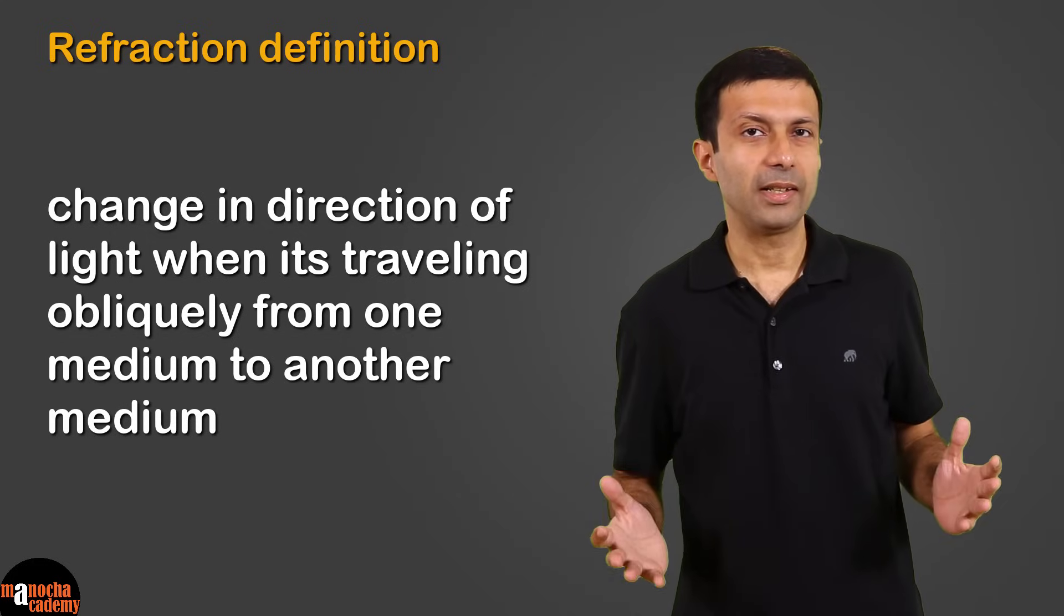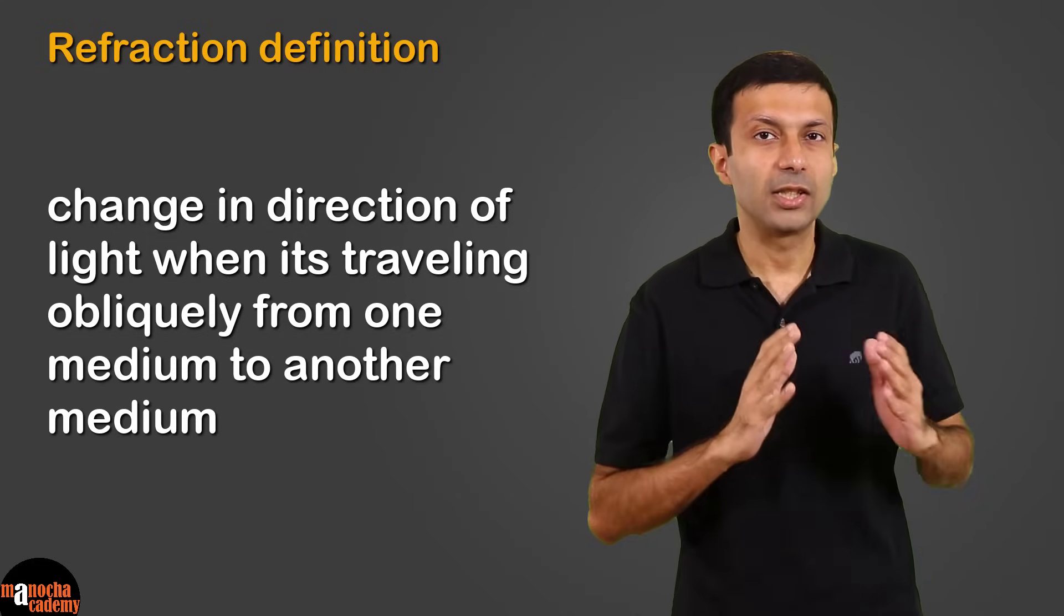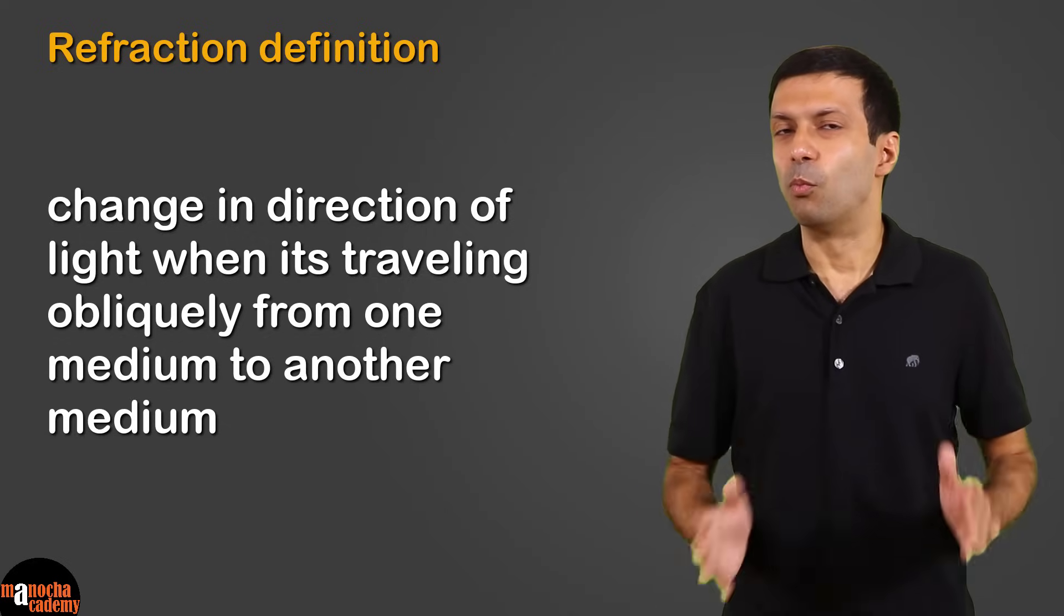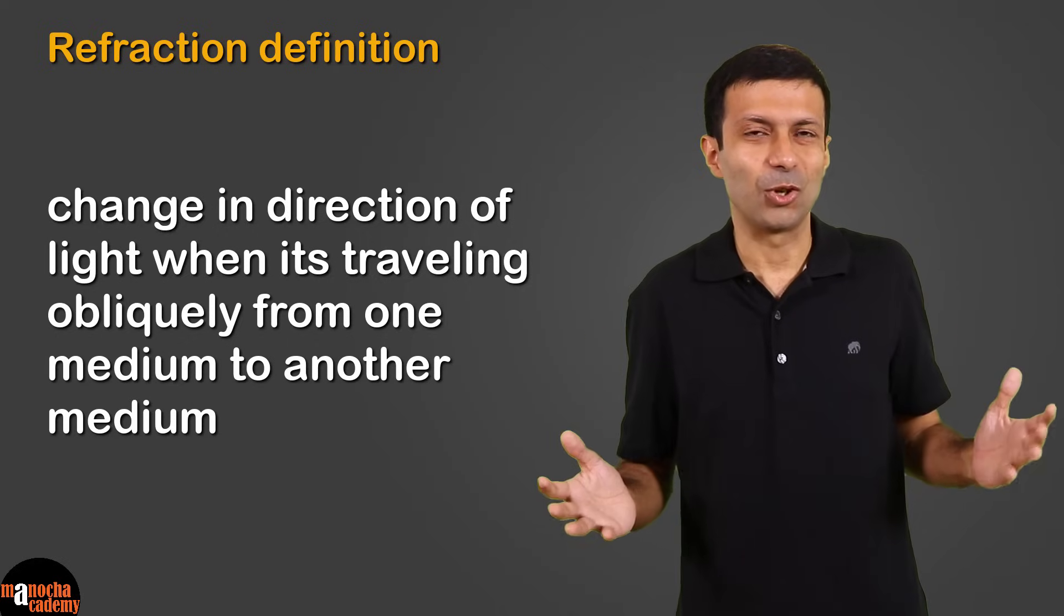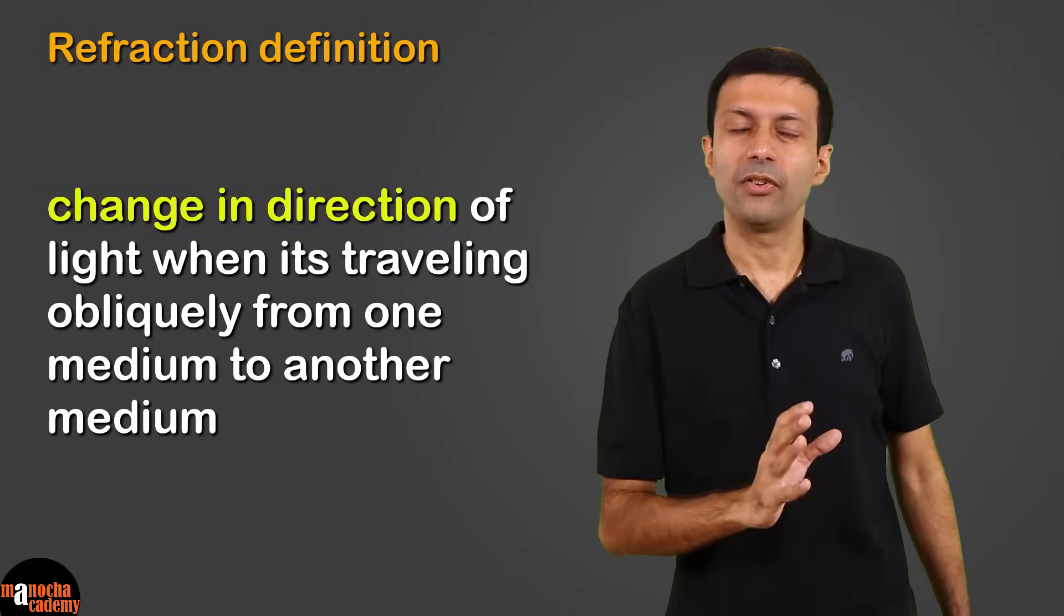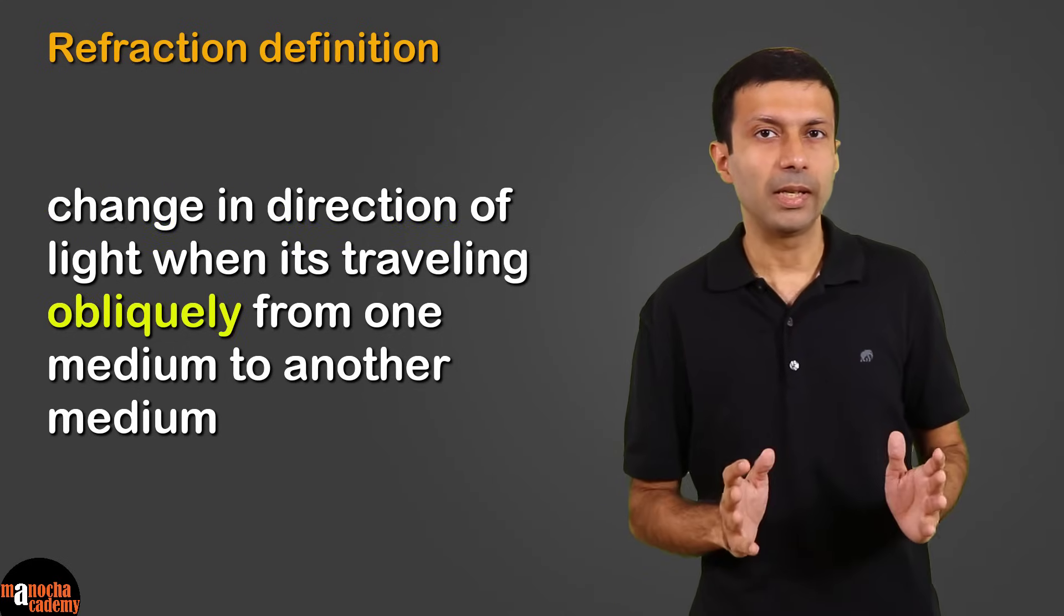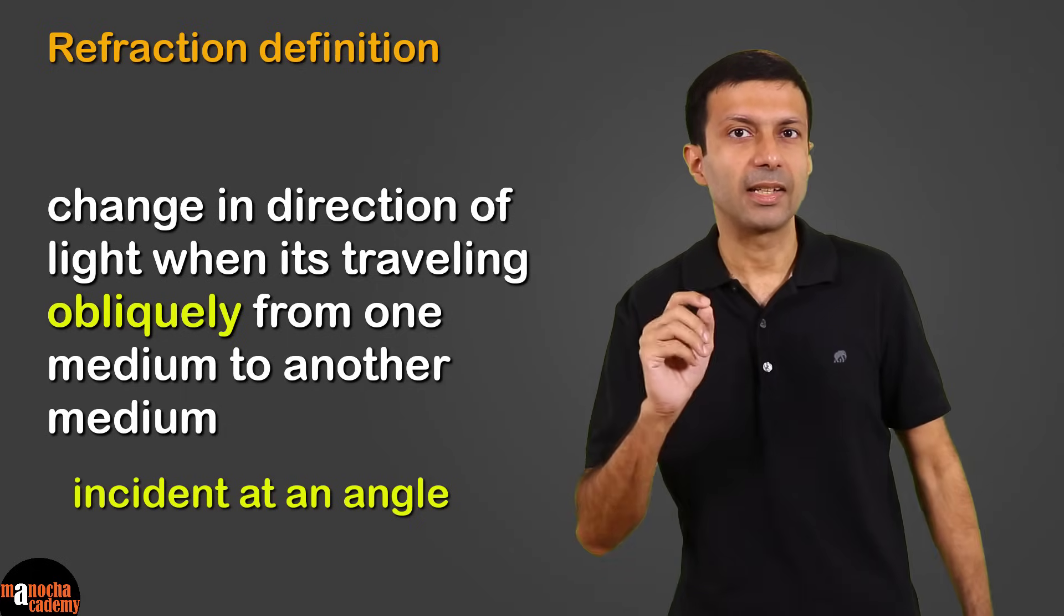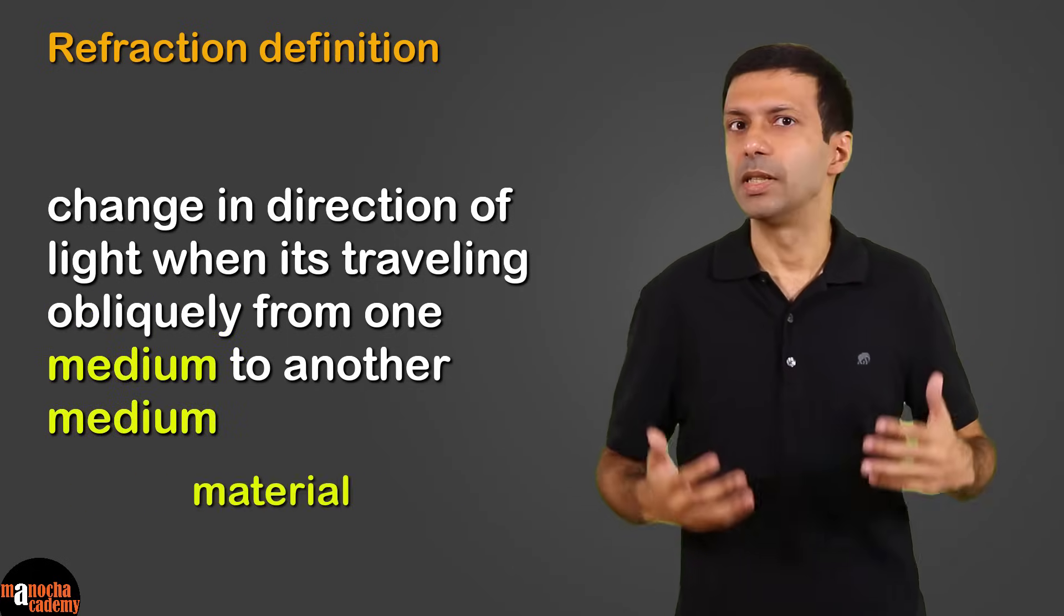So here's the fancy definition of refraction of light. Refraction of light is defined as the change in direction of light when it's traveling obliquely from one medium to another medium. So what does this all mean? Let's break it down here. Change in direction means bending of light. Obliquely means the light is incident at an angle. And the word medium means material.